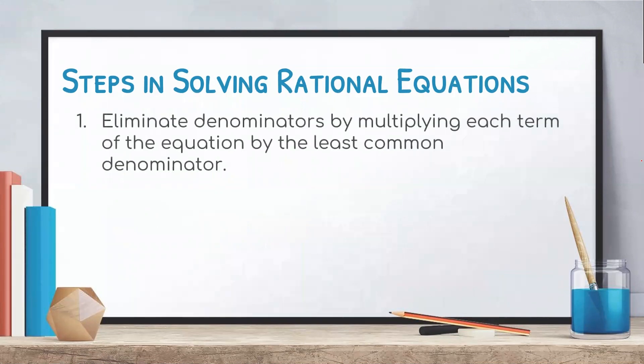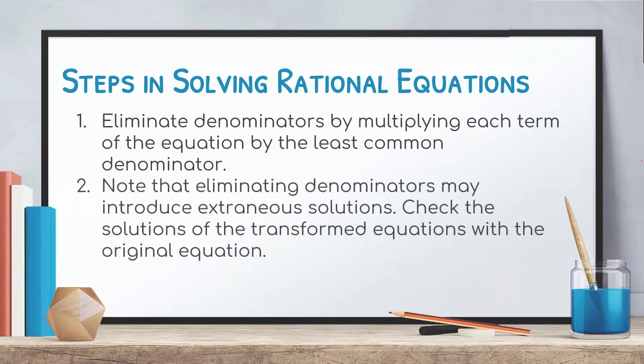Number 1: eliminate denominators by multiplying each term of the equation by the least common denominator. Number 2: note that eliminating denominators may introduce extraneous solutions. Check the solutions of the transformed equations with the original equation.